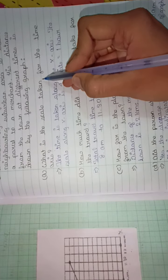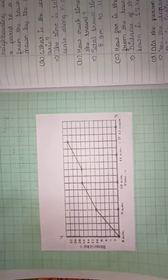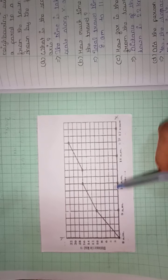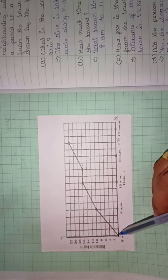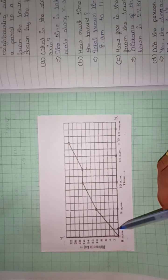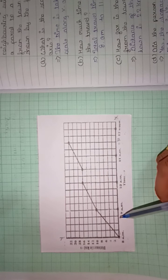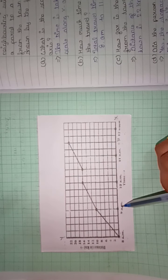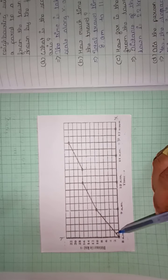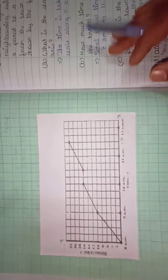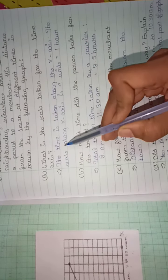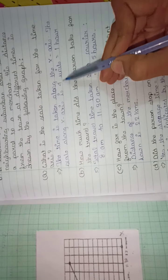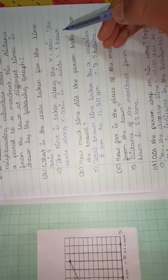The first question that is being asked here is what is the scale taken for the time axis? Time axis is on the x-axis. Here is the time axis. As I have already told, one box is one centimeter or one unit we can say. Here there are four units taken between 8 a.m. to 9 a.m., that is one hour. So, we can say four units is equal to one hour. The scale along x-axis is four units is equal to one hour.